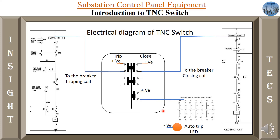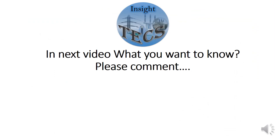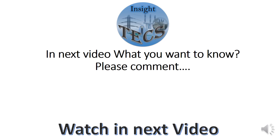In the normal situation, whenever you close the TNC switch, the circuit breaker actually closes, so the auxiliary switch becomes NO. The positive supply does not reach the LED, and the auto trip LED will not glow on the panel. So, auto trip is a basic indication of any malfunction — if the breaker is not actually closed. That is the importance of auto trip and the TNC switch in the control panel. I hope you have understood these basic concepts. Please let us know what you want to learn in the comments section. Thank you.